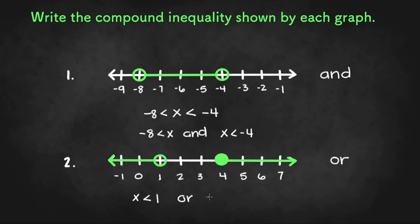And since it's a closed dot, we know it's x is greater than or equal to 4. And that would be our compound inequality of this number line right here.